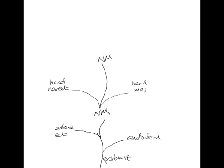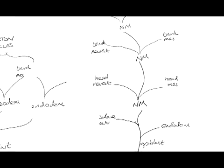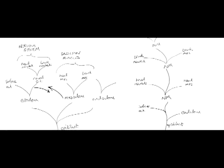These progenitors, therefore, transgress what was previously thought to be a lineage barrier after gastrulation between neural ectoderm and mesoderm, and imply that the germ layer concept has a location rather than a lineage-based significance.